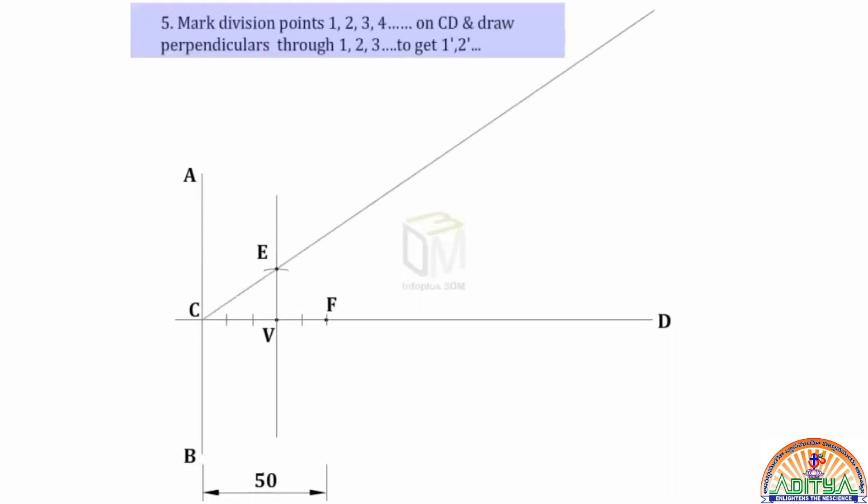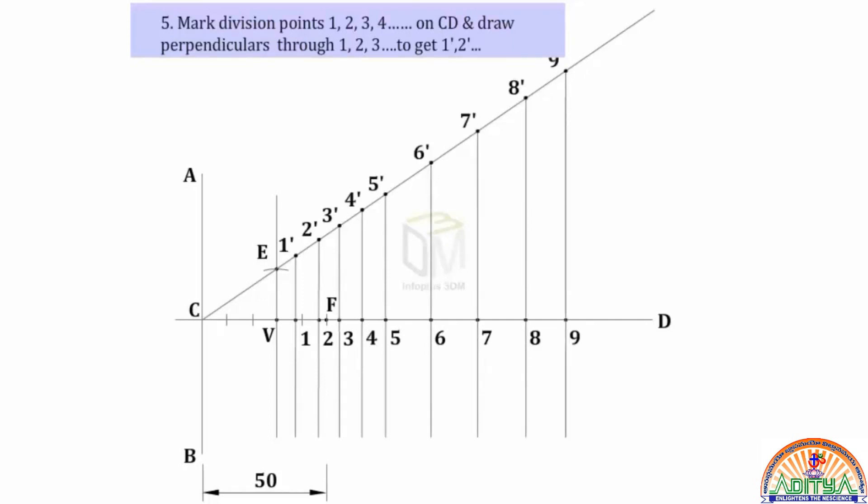Mark the division points 1, 2, 3, 4, etc. on CD and draw perpendiculars through 1, 2, 3, etc. to get 1 dash, 2 dash, 3 dash, etc.